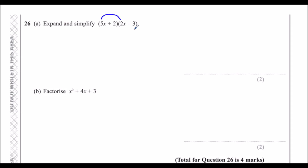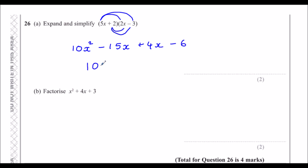Question 26a: Expand and simplify (5x plus 2)(2x minus 3). 5x times 2x is 10x squared; 5x times negative 3 is negative 15x; 2 times 2x is 4x; 2 times negative 3 is negative 6. Collecting like terms: 10x squared minus 11x minus 6.